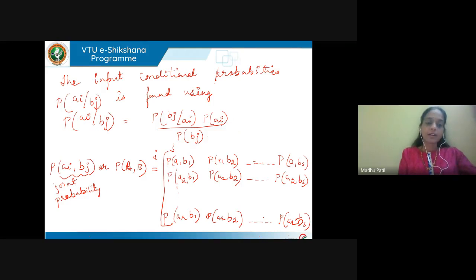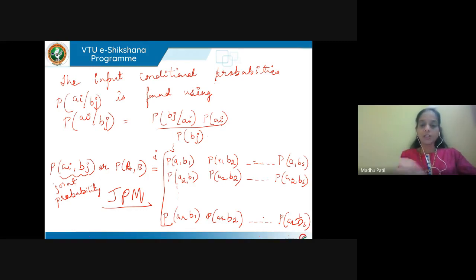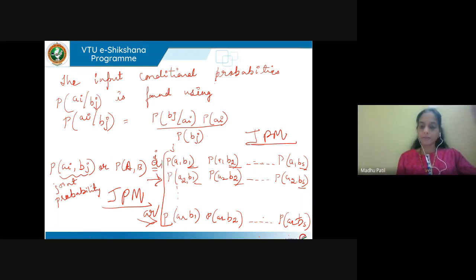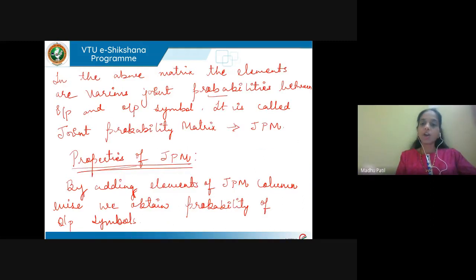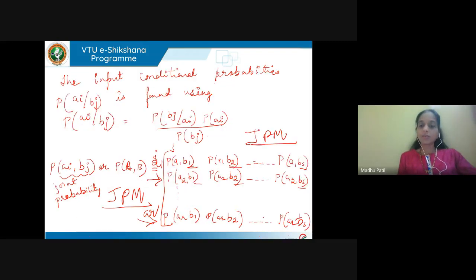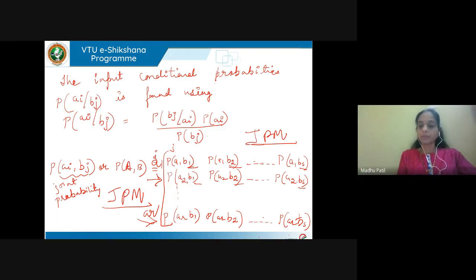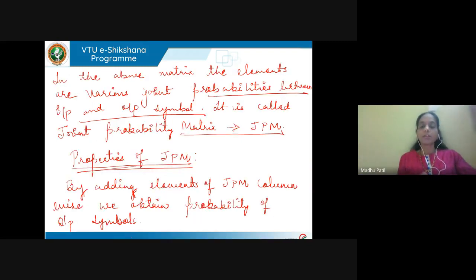We can also define a joint probability matrix (JPM), which tells us P(Ai, Bj) — the joint probability between input and output symbols. The first row gives the probability of receiving B1, B2, up to BS when symbol A1 is transmitted. The second row is for symbol A2, and the last row for AR. Column-wise, we see output symbols B1, B2, up to BS. This is called the joint probability matrix.